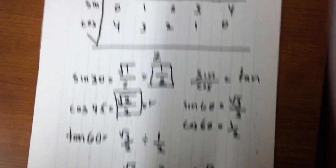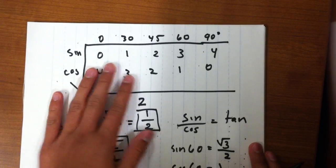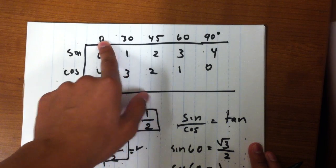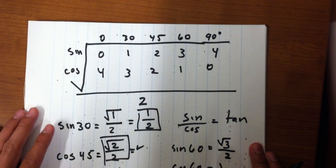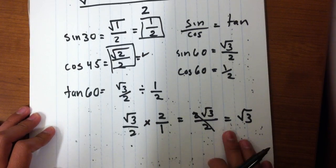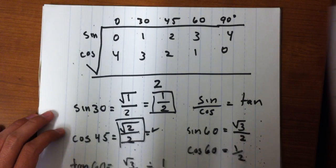It's that simple. No memorizing, just learning a simple chart with basic numbers and a 2, and of course the most used values in trigonometry. And that's basically it for this video. Thank you.